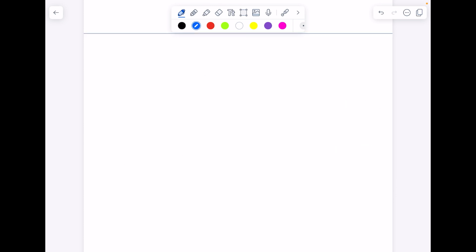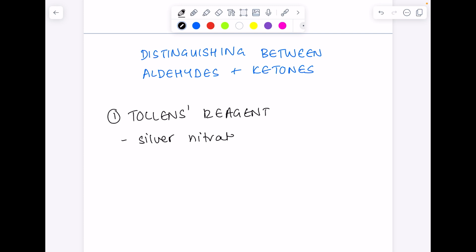Now, to distinguish between aldehydes and ketones, you've got two tests to choose from. The first one is going to be using Tollens reagent.